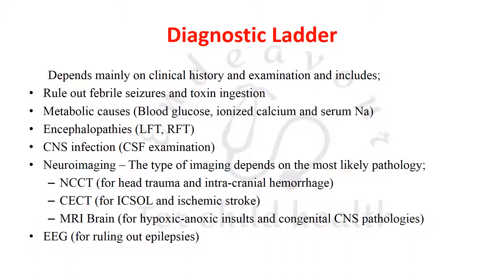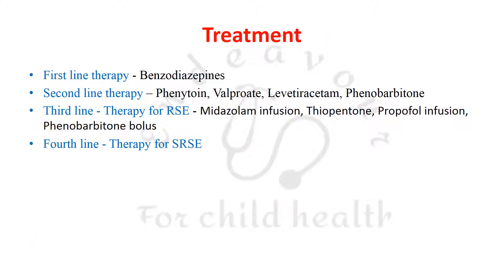For CNS infection, do CSF examination and neuroimaging. A non-contrast CT scan is done for head trauma and intracranial hemorrhage; a contrast-enhanced CT (CECT) for intracranial space-occupying lesions and ischemic stroke; MRI brain for hypoxic-anoxic injury and congenital CNS pathologies. EEG should also be done for ruling out epilepsies.